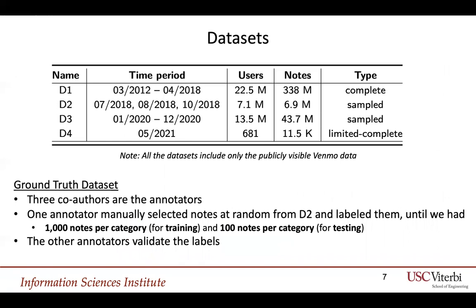Datasets. Please note that all datasets described here include only publicly visible Venmo data. We have four datasets. D1 covers six years of all public data on Venmo. The remaining datasets have sample data because of changes in the Venmo API, which we collected later. D2 was publicly released by others. We also utilized the D2 dataset to build a ground truth dataset for our methodology. Three co-authors annotated this dataset. One annotator manually selected notes at random from D2 and labeled them until we had 1,000 per category for training and 100 notes per category for testing. The other annotators validated these labels.